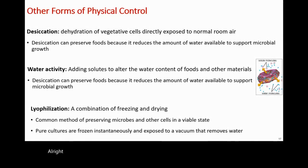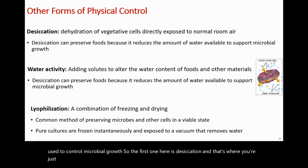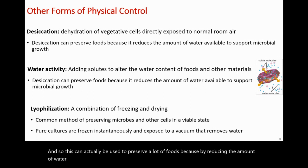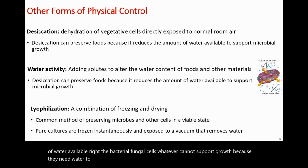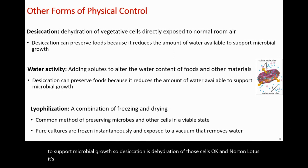This video is going to talk about some other forms of physical control that can be used to control microbial growth. The first one is desiccation, where you're dehydrating cells — pulling water out of them. This can be used to preserve a lot of foods, because by reducing the amount of water available, bacterial or fungal cells cannot support growth since they need water to survive.